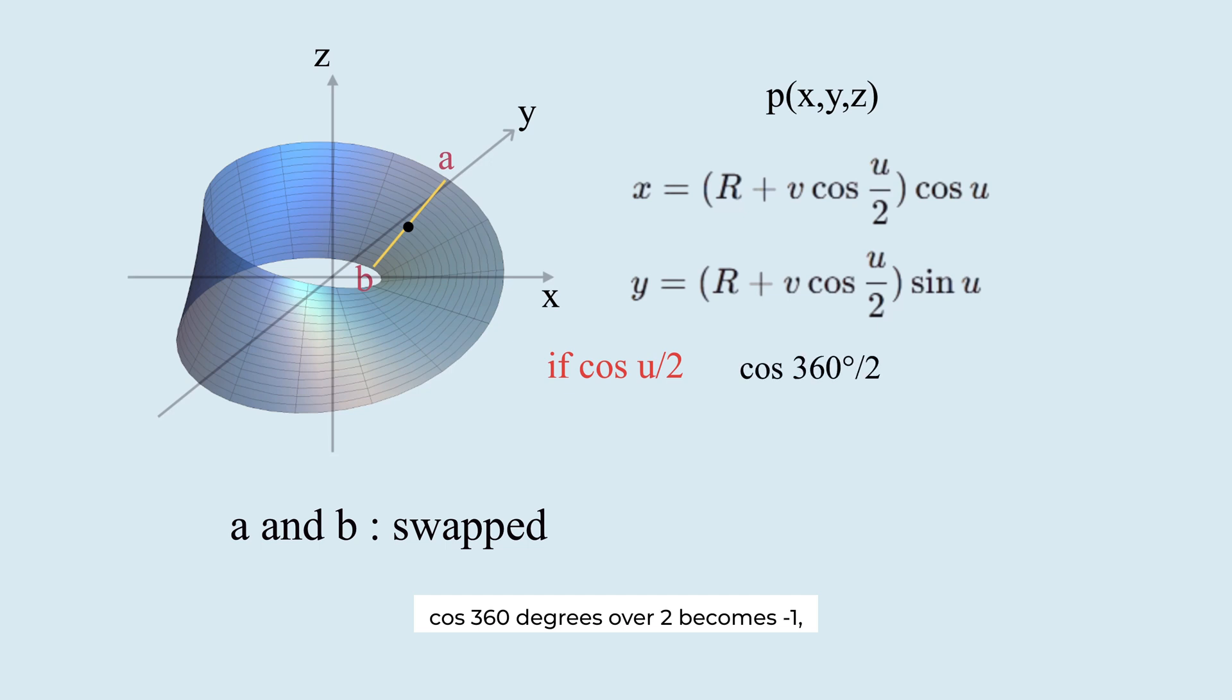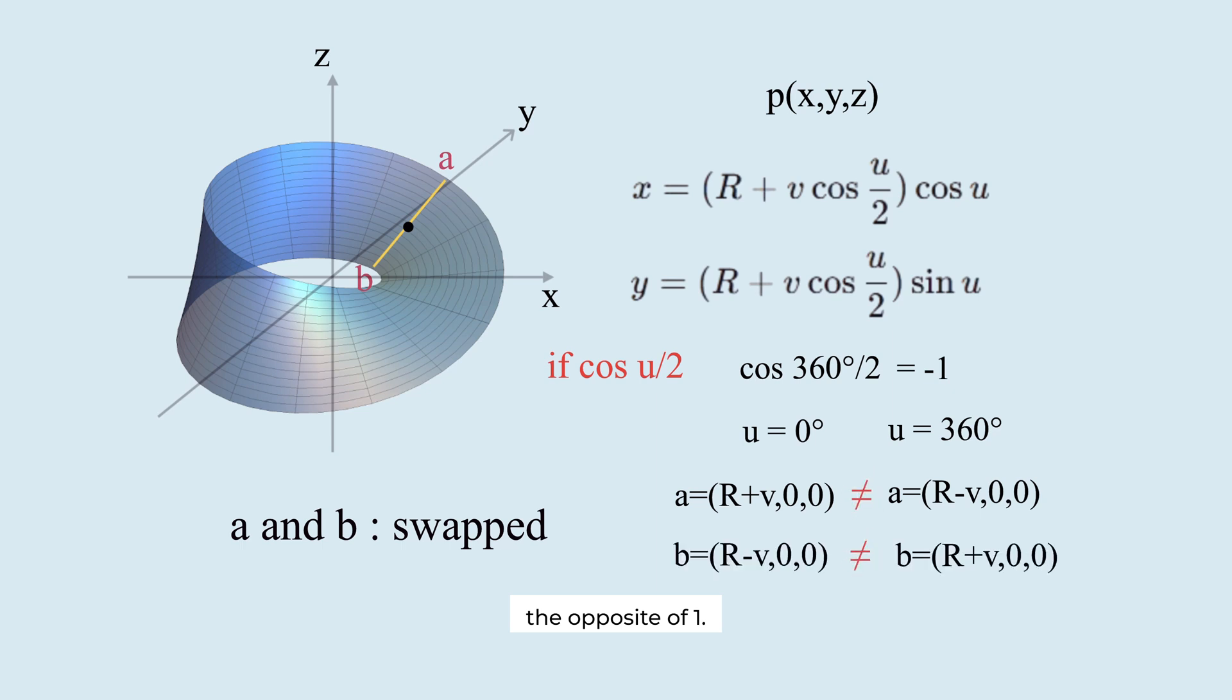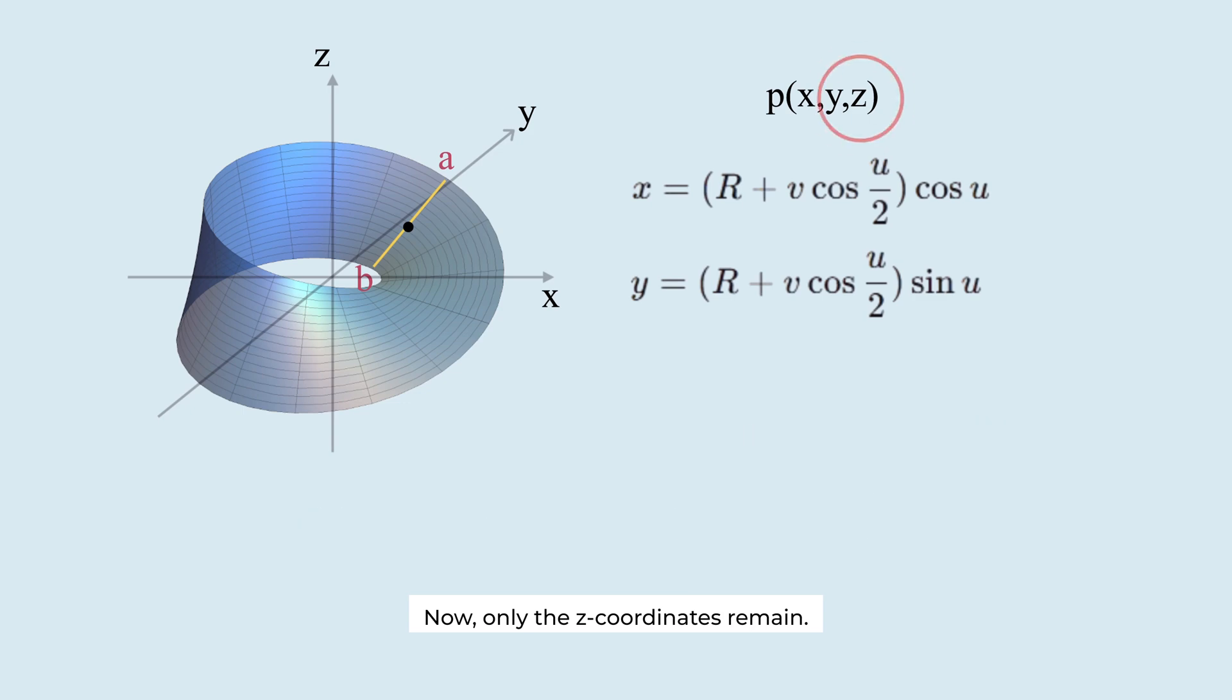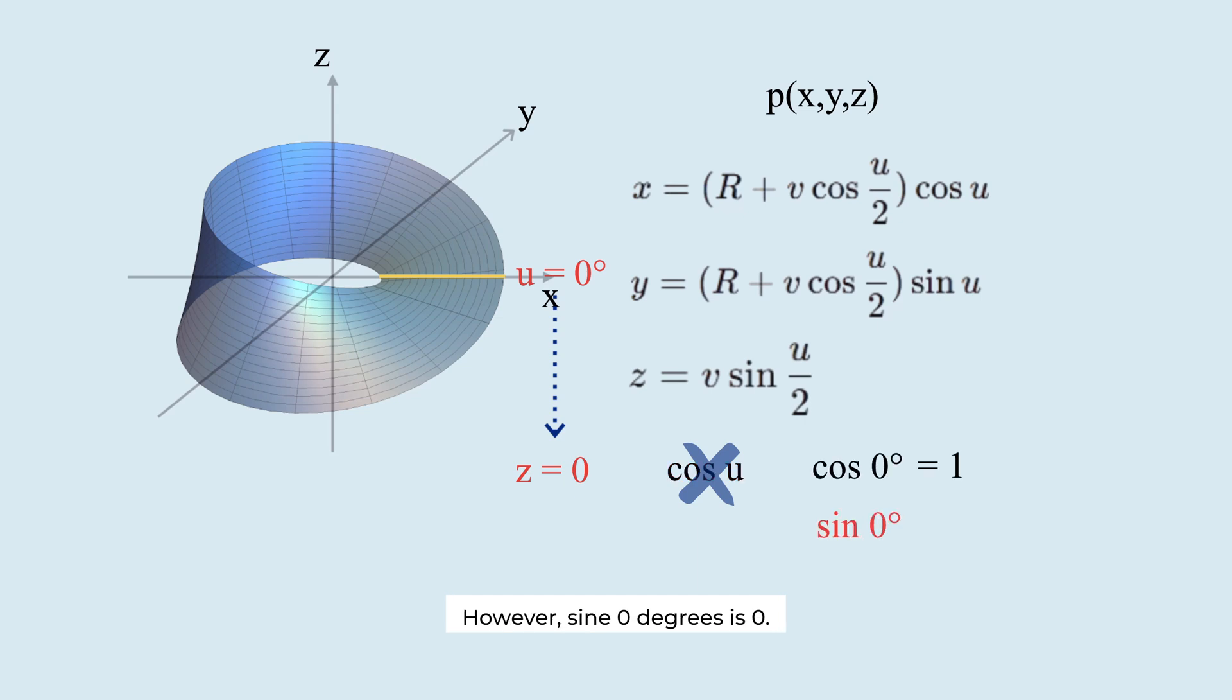Now, only the z coordinates remain. That equation is this. We see u/2 again. At the start, the line is on the x-axis, so the z value is 0. Thus, we cannot use cosine since cos(0°) is 1. However, sin(0°) is 0.